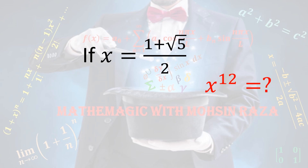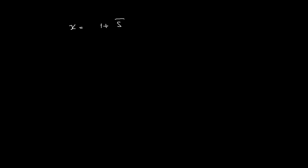We have x equals (1 plus √5) over 2, which means 2x equals 1 plus √5. Taking the square on both sides, we get (2x)² equals (1 plus √5)².